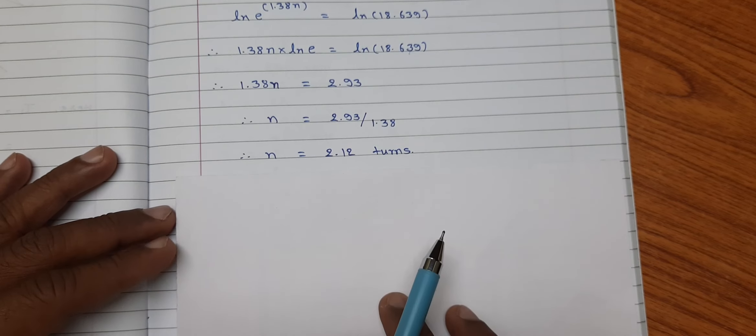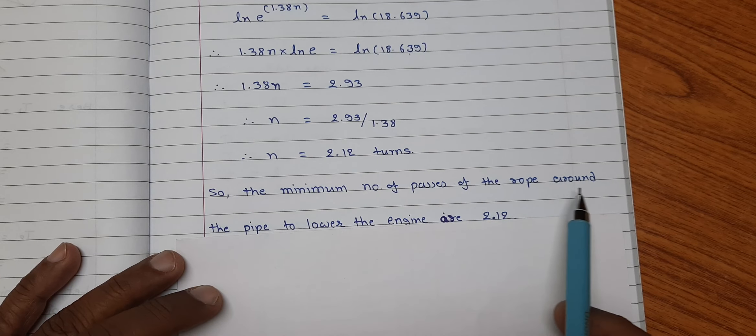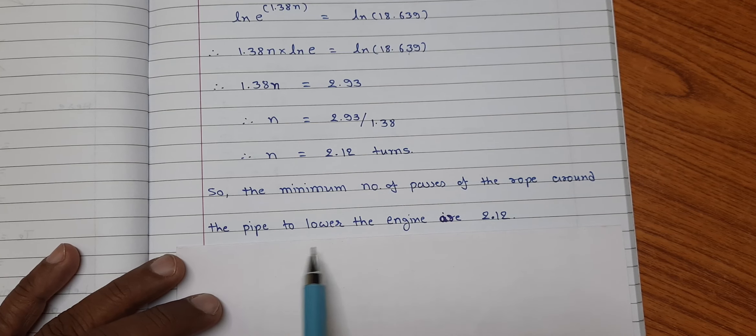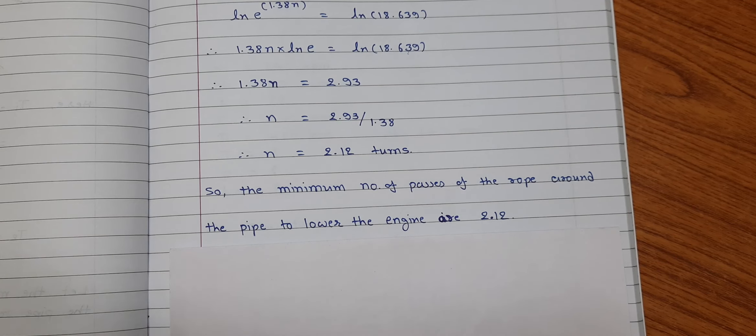So, we can conclude that the minimum number of passes of the rope around the pipe to lower the engine are 2.12. Thank you friends.